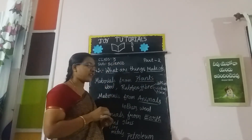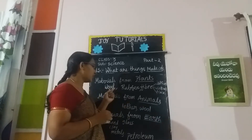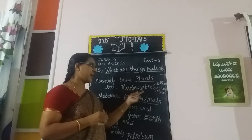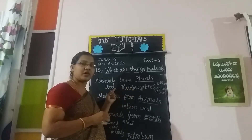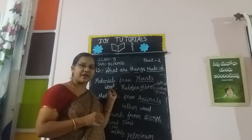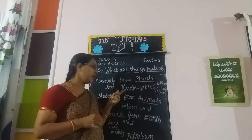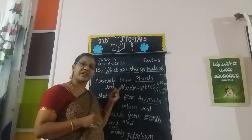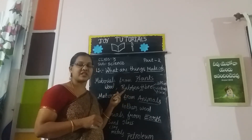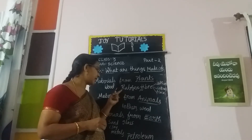Here, material is from plants. We can get wood, rubber, and fiber. Wood is based on hard nature and soft nature. From hard timber we can prepare furniture. From soft timber we can prepare paper.